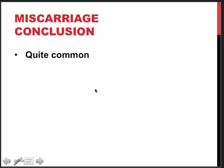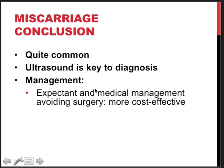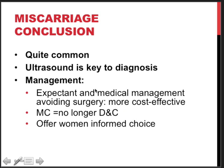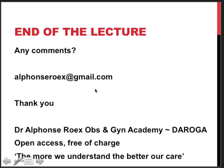In conclusion, miscarriages are quite common, ultrasound is key to the diagnosis, and there are three management options. Expectant and medical management avoid surgery, are more cost-effective, and miscarriage should no longer automatically mean dilatation and curettage. Offer the woman an informed choice, always discuss the psychological impact, and administer anti-D when indicated. This is the end of the lecture — if you have comments or questions, please drop me an email. Thank you for your attention.